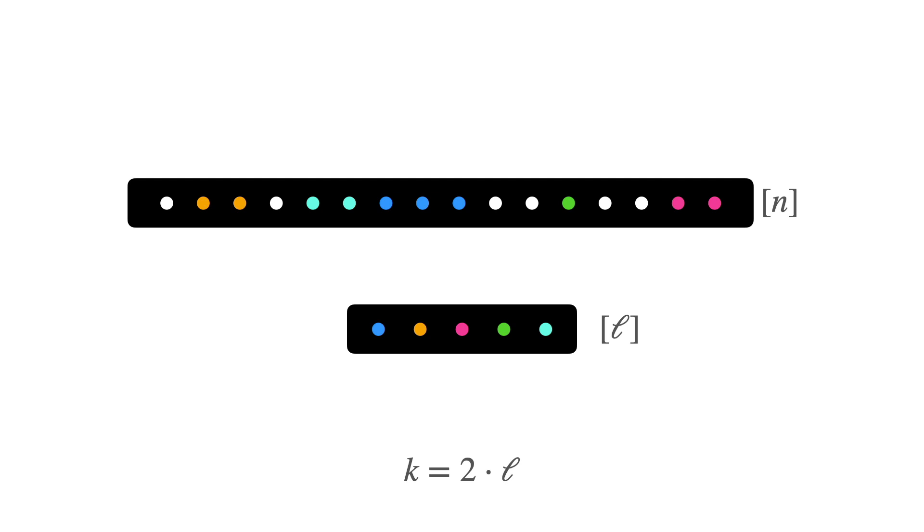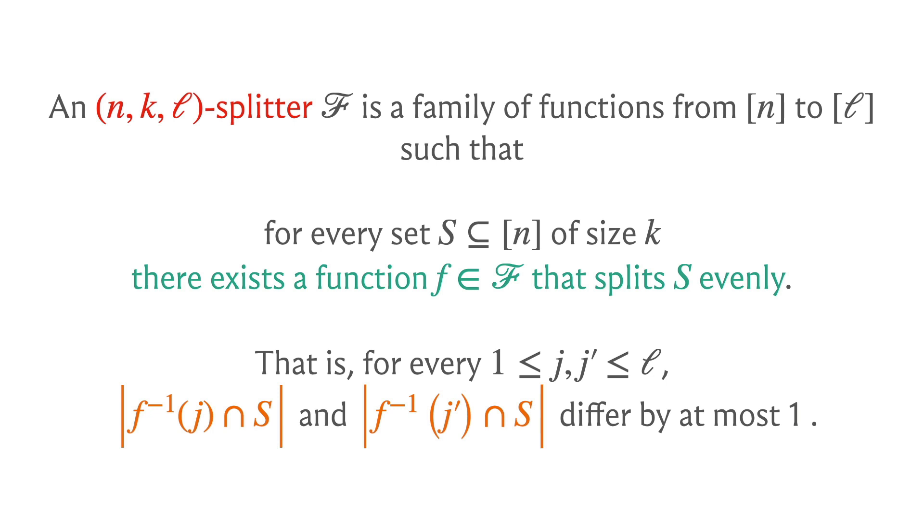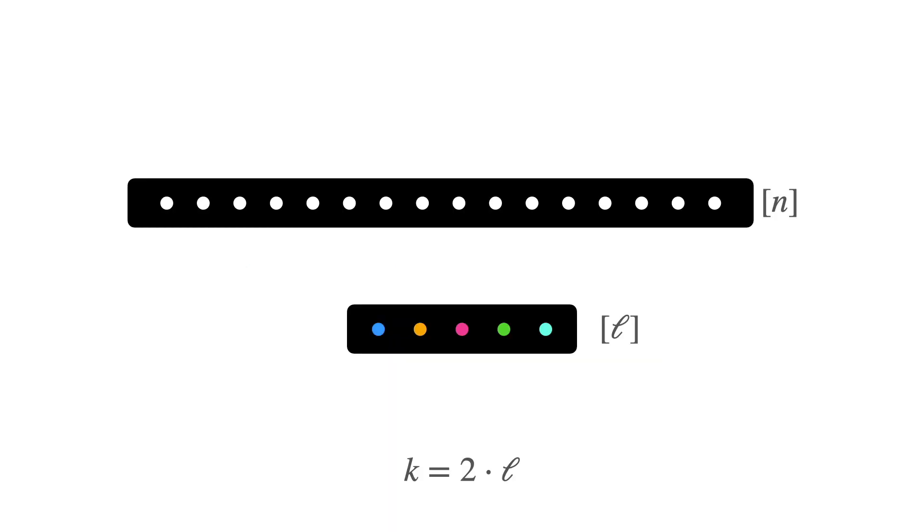Would you consider this to be a valid, a good function for this particular subset? Well, if you think about it and just look at the pre-image of the blue element and the green element, you will see that there are three elements that are mapped to the blue element and just one that is mapped to the green element. But notice that from the definition previously, what we wanted was the pre-image of any pair of elements from 1 to l to differ by—the sizes of the pre-images, we wanted them to differ by at most one. And therefore this particular example, this is not really a valid split.